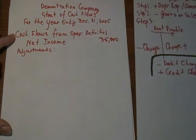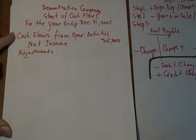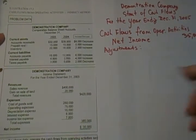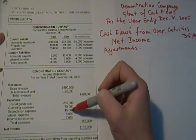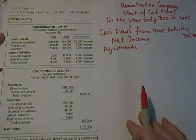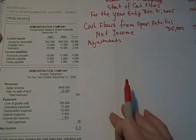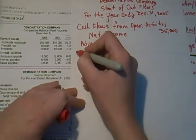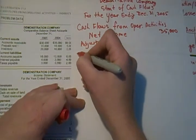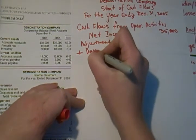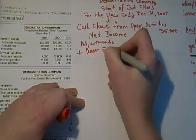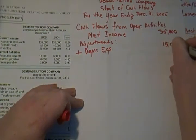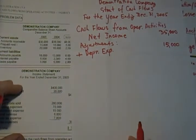On my data, I have depreciation listed right here: fifteen thousand dollars. I am going to add it back to my net income because there's no cash outflow. Add depreciation expense: fifteen thousand dollars.